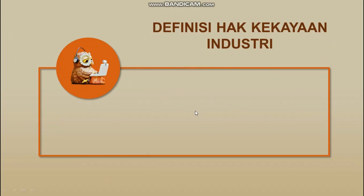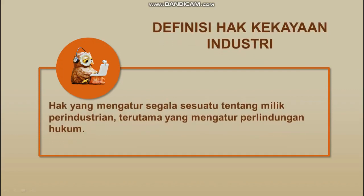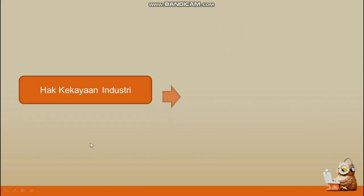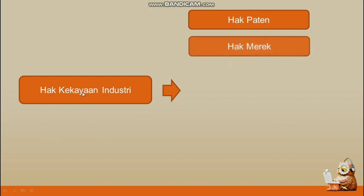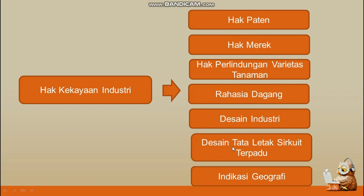Selanjutnya kita akan membahas tentang hak kekayaan industri atau industrial property right. Definisinya adalah hak yang mengatur segala sesuatu tentang milik perindustrian, terutama yang mengatur tentang perlindungan hukum. Contoh-contoh dari hak kekayaan industri terdiri dari: hak paten, hak merek, hak perlindungan varietas tanaman, rahasia dagang, desain industri, desain tata letak sirkuit terpadu, dan yang terakhir adalah indikasi geografis.